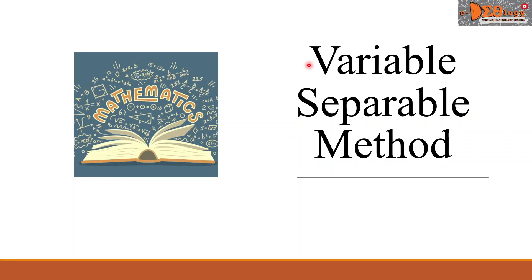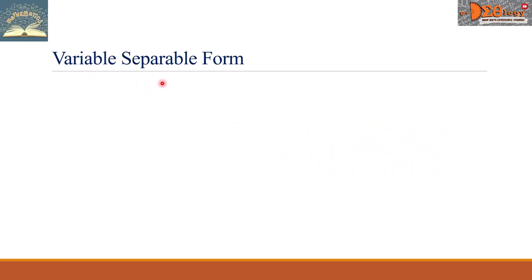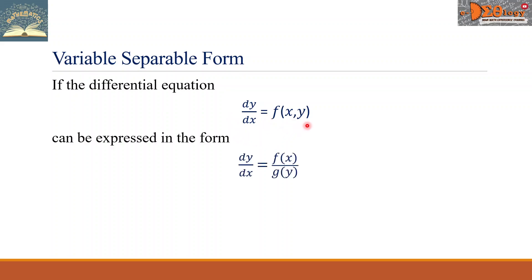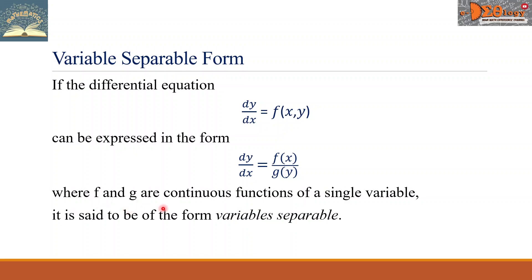Hi everyone. Today we're going to study the variable-separable method. Let's begin with the variable-separable form. If the differential equation dy over dx equals a function of x and y can be expressed in the form dy over dx equals f of x over g of y, where f and g are continuous functions of a single variable, it is said to be of the form variables-separable.